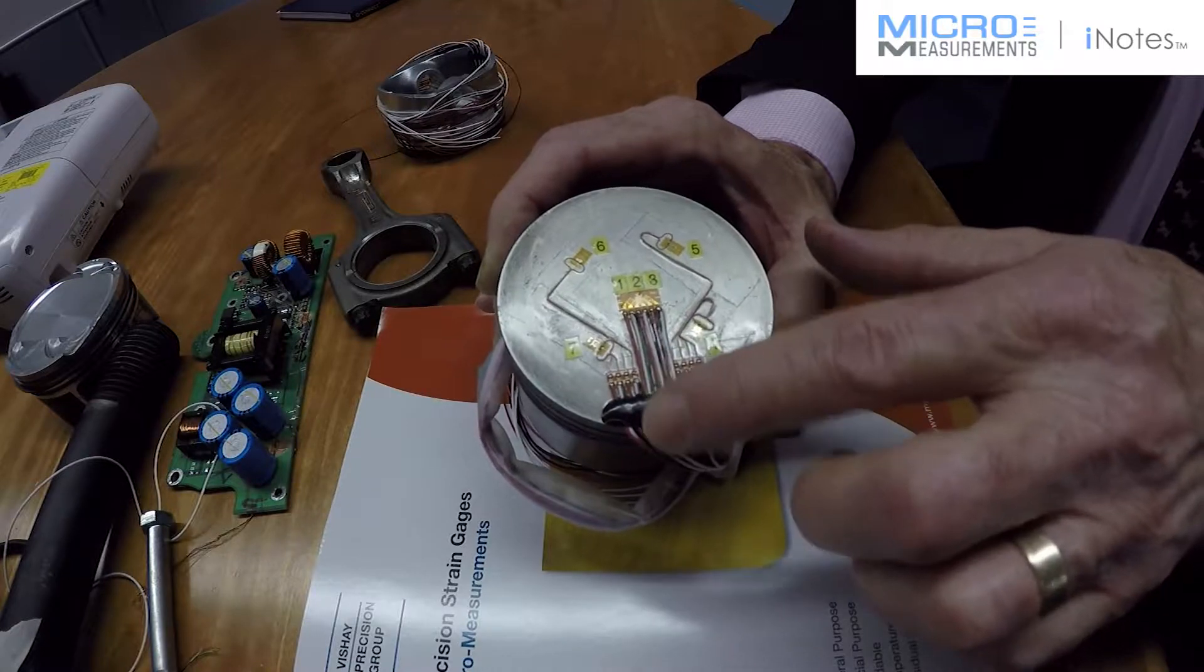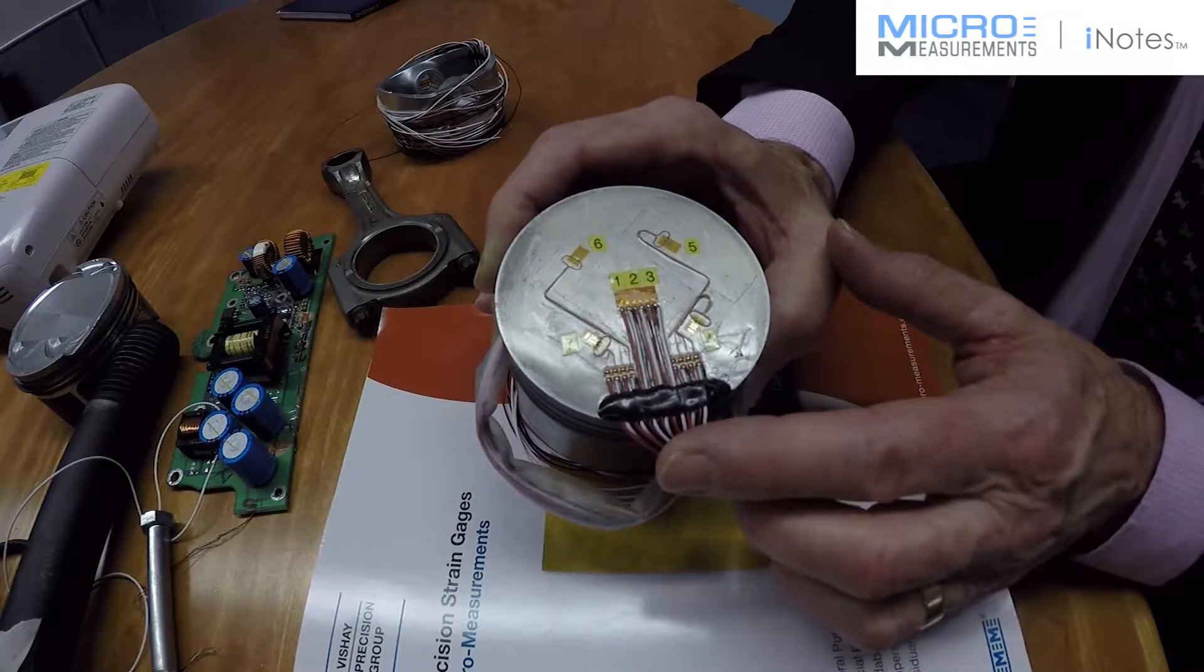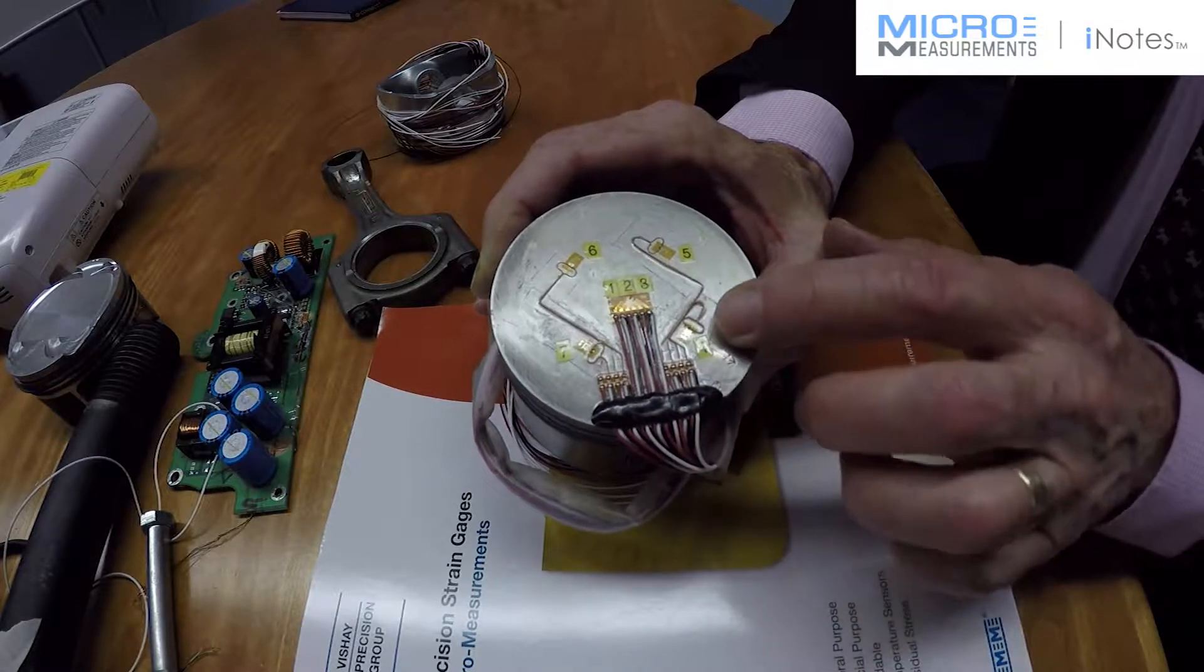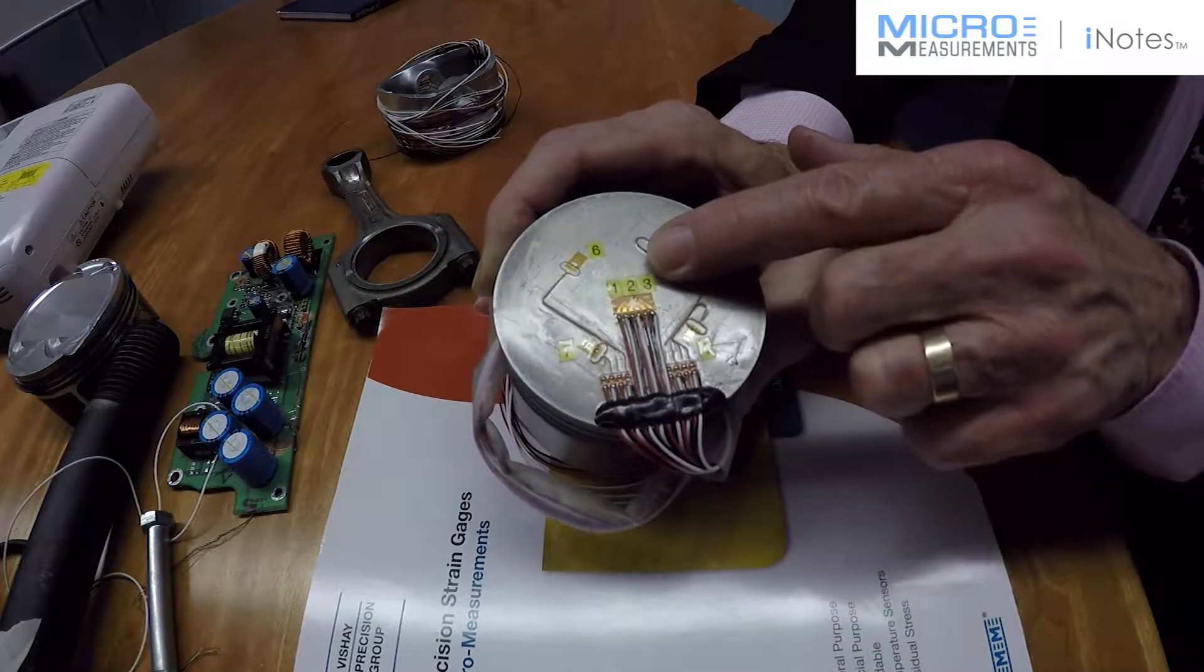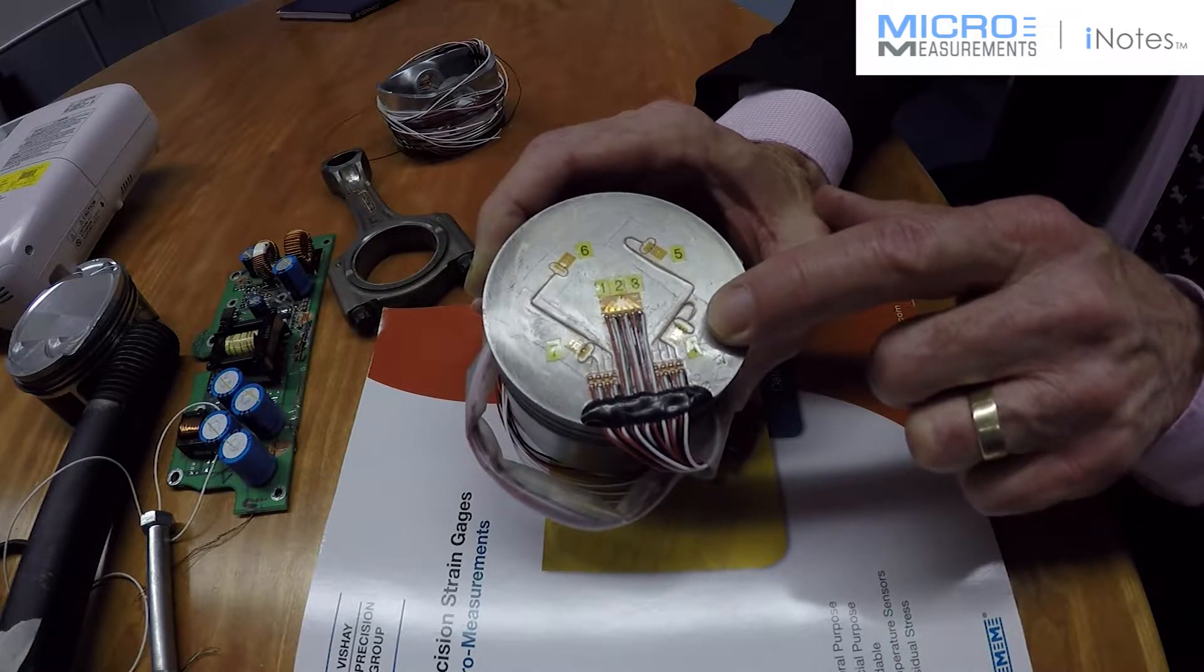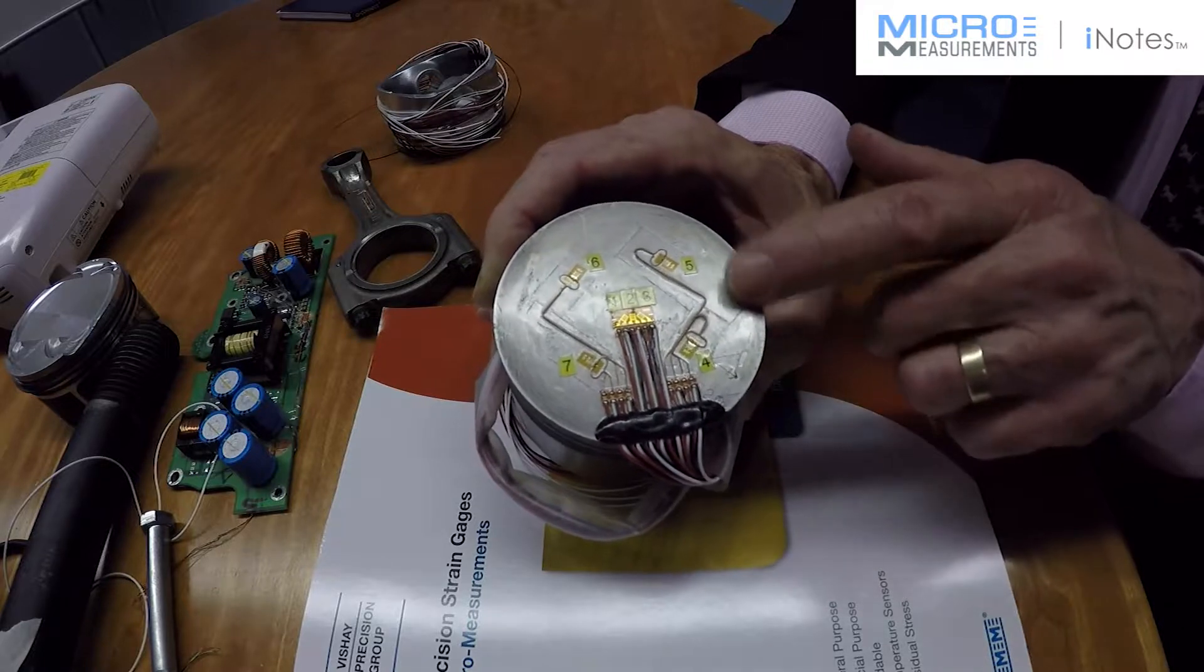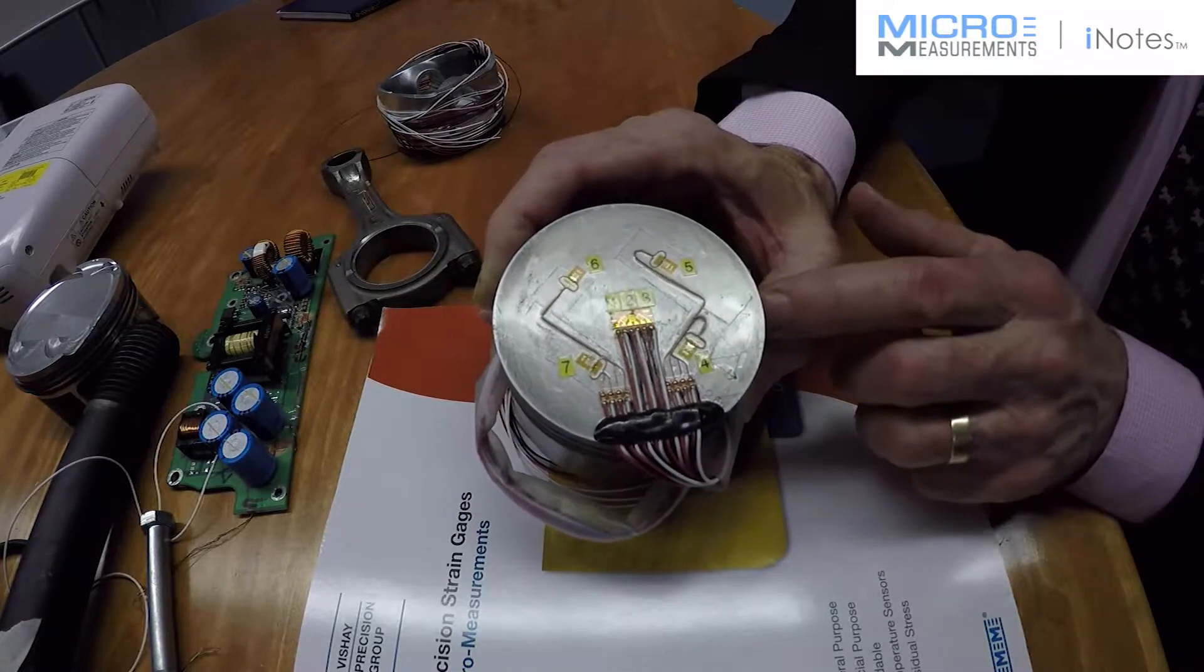The gauges themselves are wired using a three-core ribbon cable which Micromeasurements provides. The gauges are CEA-125-UR, and we're using a 125-AD normal EA strain gauge in this situation. And here we have a fine enamel copper wire, 134-AW.